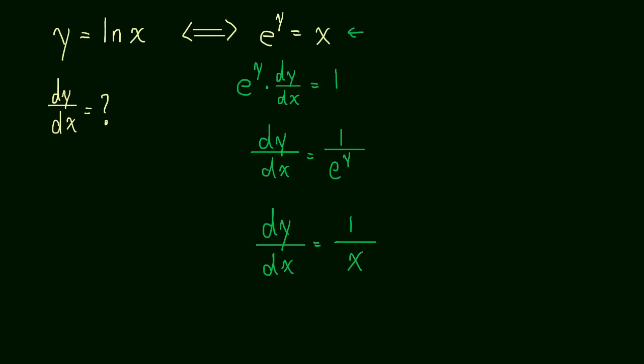So the derivative of the natural log of x is no longer a mystery. It was really easy to find if you understand implicit differentiation, and it turns out to be 1 over x. That's pretty cool. The derivative of the natural log just comes out to 1 over x. Alright, see you in the next video.